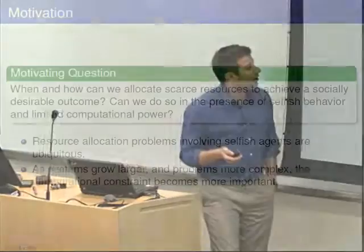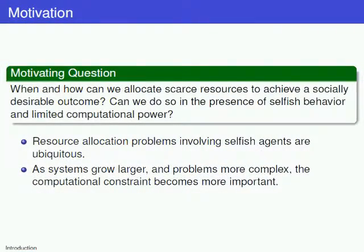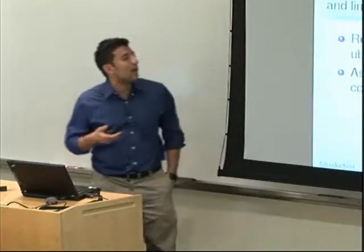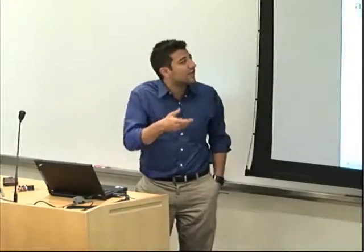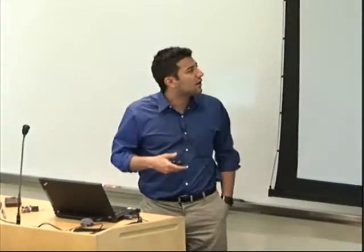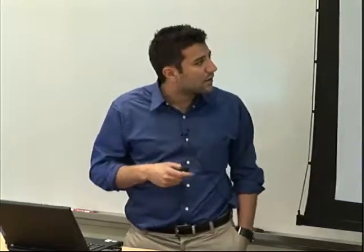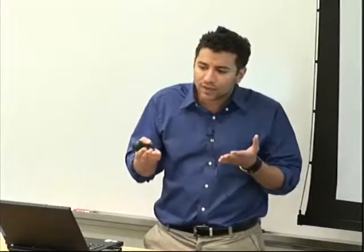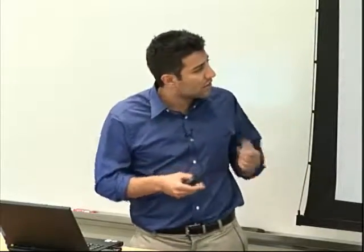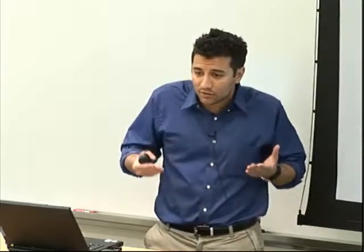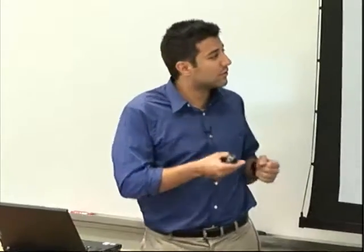I'm going to start with an introduction. I'm motivated by the following question: when can we allocate scarce resources efficiently to get a socially desirable outcome? Can we do it in the presence of both selfish behavior and computational limitations? There's a computational constraint — I have polynomial time to calculate how I'm going to allocate resources — and there's an economic constraint: I have selfish behavior that controls my input.